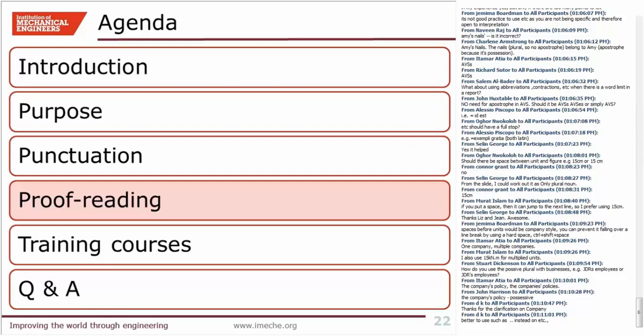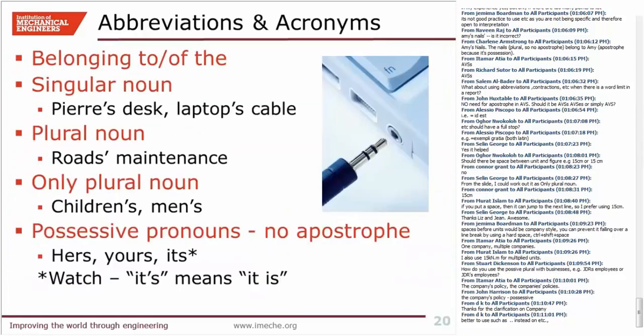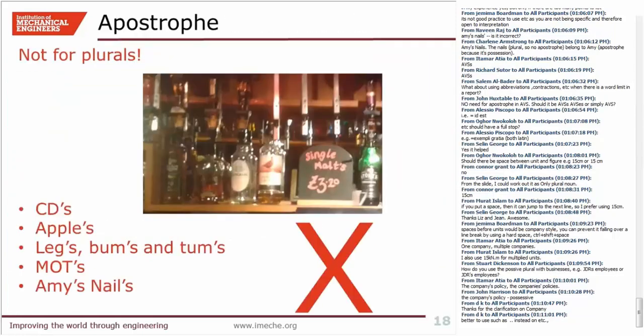There seems to be some confusion about the example of Amy's nails. Could you go back and explain that one again? The apostrophe on 'Amy's' is correct because it's presumably Amy's salon. But if 'nails' is plural, then there should be no apostrophe — it should simply be 'nails' without an apostrophe.